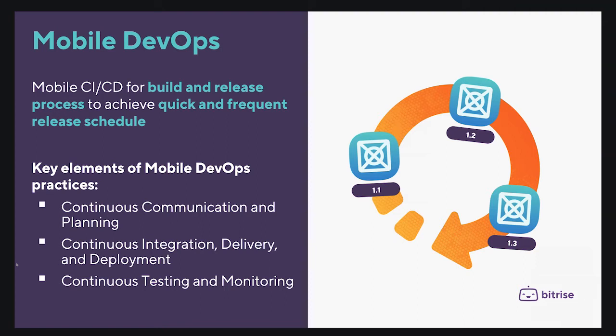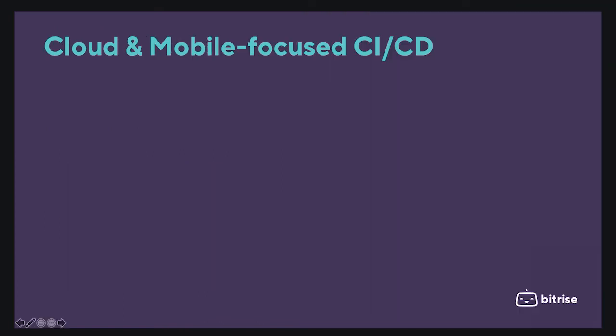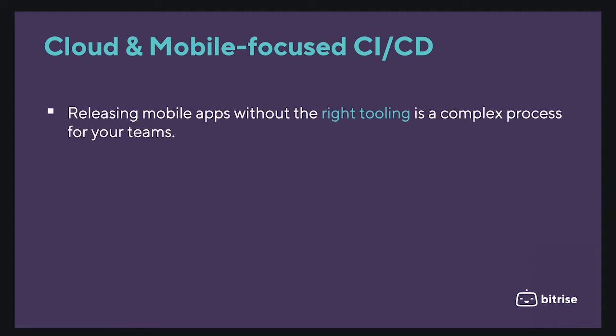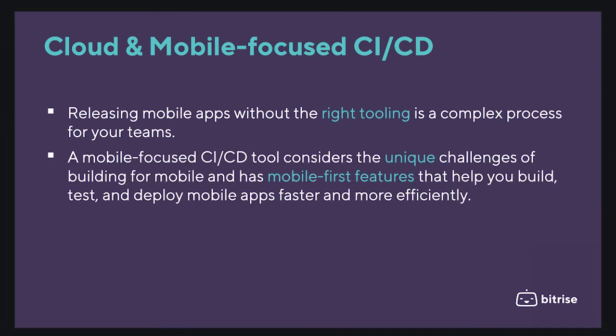The key elements of mobile DevOps are continuous communication, planning, integration, delivery, deployment, testing, and monitoring. As we know, releasing mobile apps without the right tooling is a complex process for your team. A mobile-focused CI/CD tool considers the unique challenges of building mobile applications and has mobile-first features that help you build, test, and deploy mobile apps faster and more efficiently.